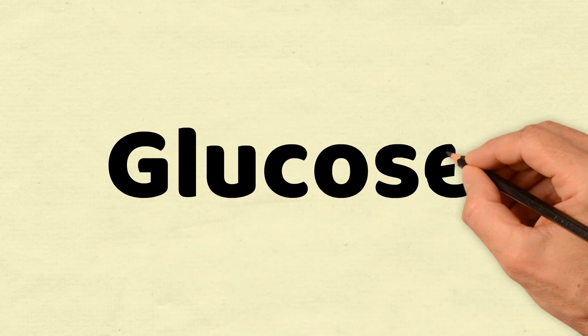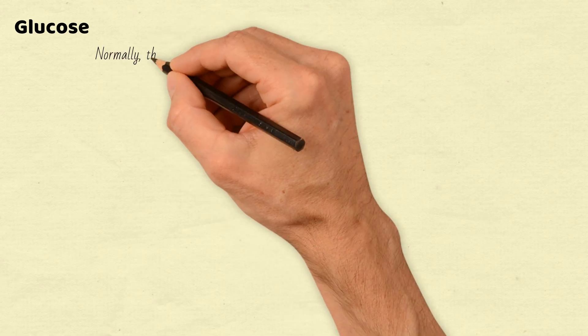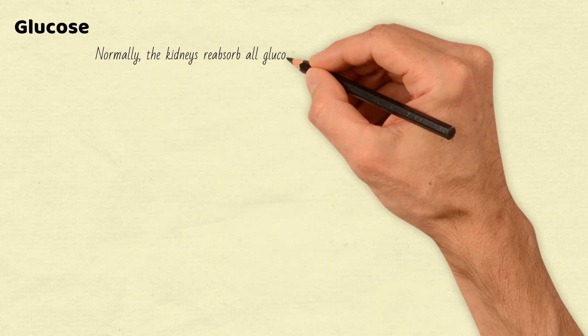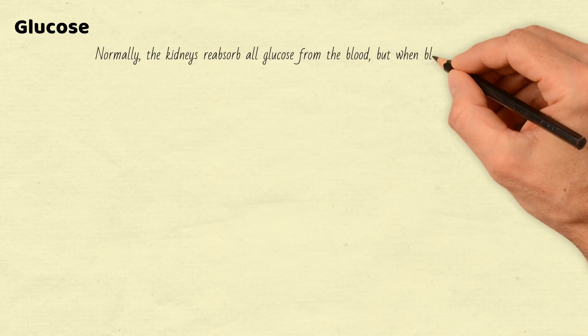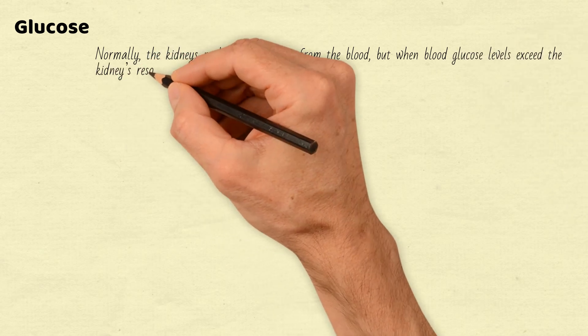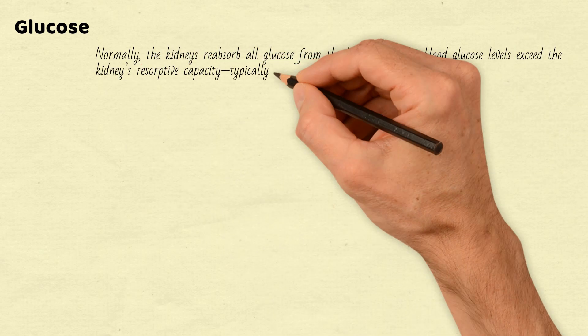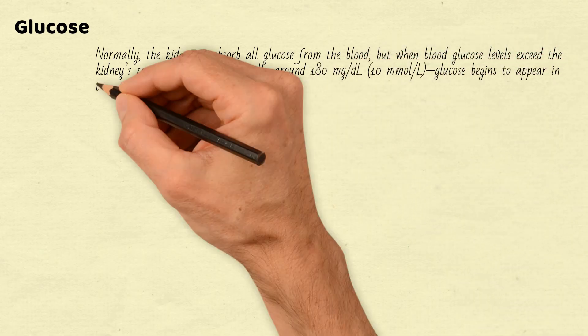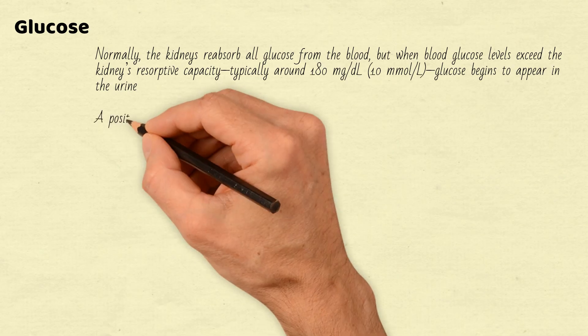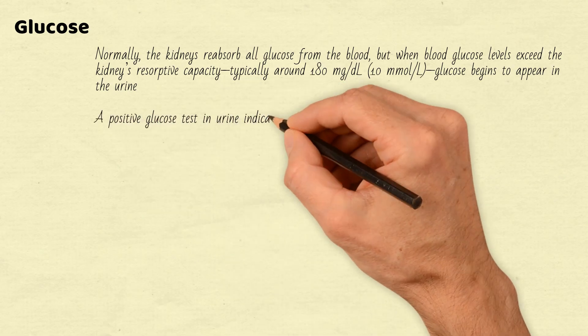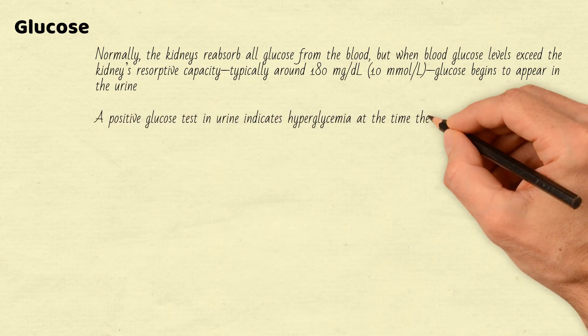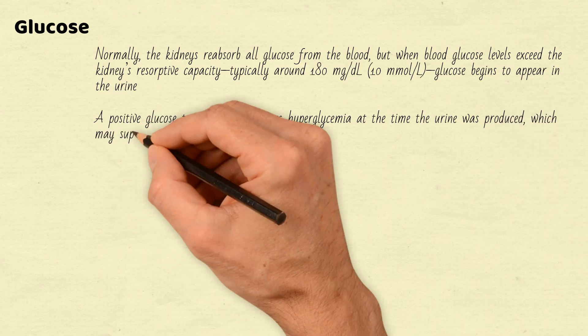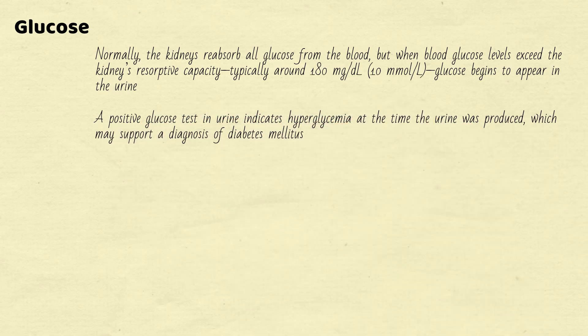Now let's jump to glucose in urine. Normally, the kidneys reabsorb all glucose from the blood, but when blood glucose levels exceed the kidneys' resorptive capacity, typically around 180 mg per deciliter (10 millimoles per liter), glucose begins to appear in the urine. A positive glucose test in urine indicates hyperglycemia at the time the urine was produced, which may support a diagnosis of diabetes mellitus.